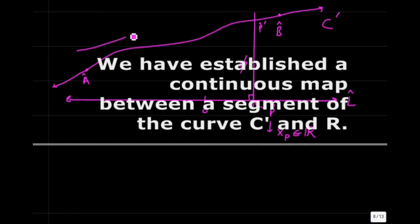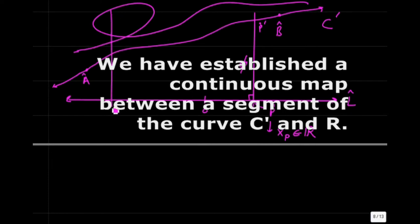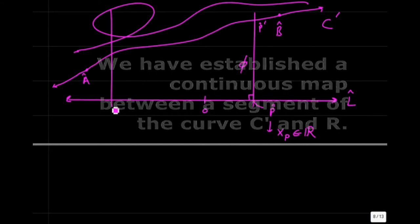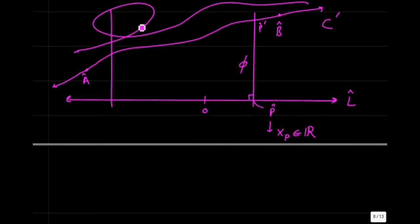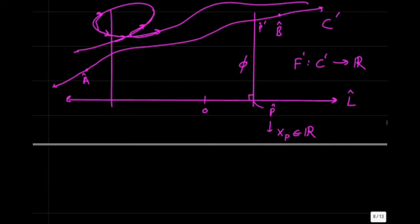By the same reasoning, you can establish a continuous mapping between points on this curve and the real numbers. If you're really a bad draftsman and drew something with multiple intersections, you'd have to figure out what to do — but even that's doable, there are some subtleties. In terms of just drawing a slightly bumpy curve, this carries over just fine and you have a continuous mapping F prime that maps C prime to the real numbers.